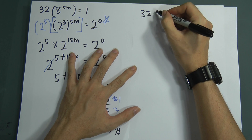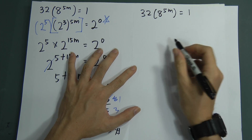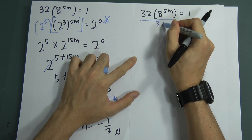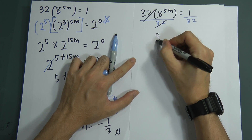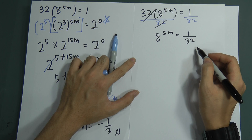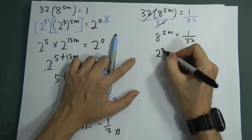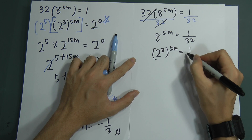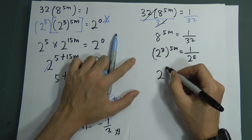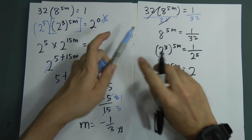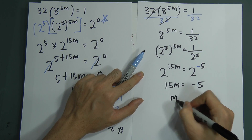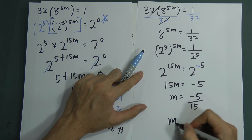Let me write one more time: 32 times 8 to the power of 5m equals to 1. I can divide both sides by 32. When I divide 32 on each side, I get 8 to the power of 5m equals to 1 over 32 — meaning I move the 32 to the other side. Now I change everything to base 2: 2 to the power of 3, to the power of 5m, equals to 1 over 2 to the power of 5. I multiply: 2 to the power of 15m equals to — 1 over means the power is negative — so negative 5. Therefore 15m equals to negative 5, m equals to negative 5 divided by 15, so m equals to negative 1 over 3. You can get the same answer.